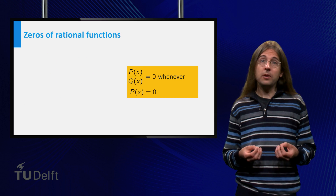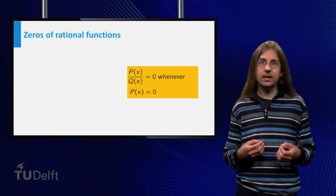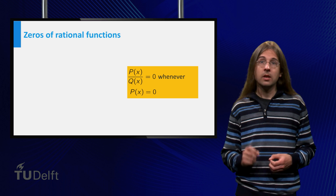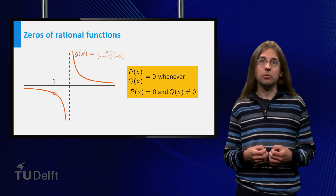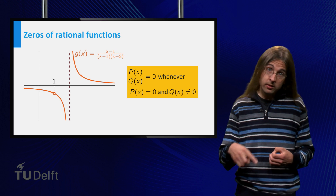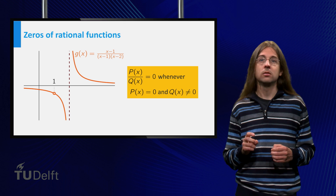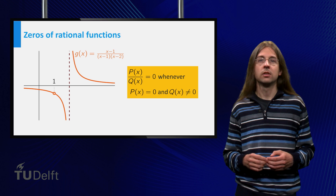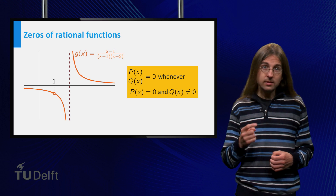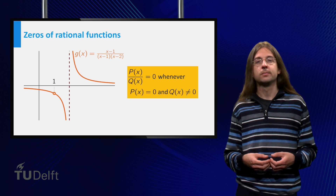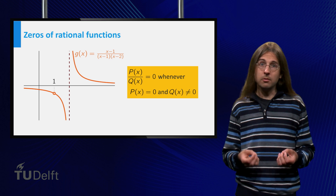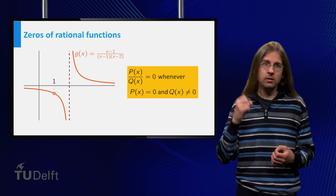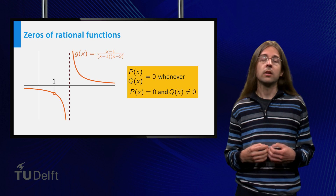A rational function can only intersect the x-axis if the numerator is zero. But beware! As you saw in a previous example, if numerator and denominator have the same zero, then this point is not in the domain of our function. Thus, it is not a zero of the rational function. The zeros of a rational function are precisely those zeros of the numerator for which the denominator is non-zero.